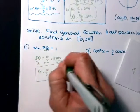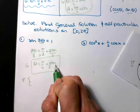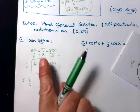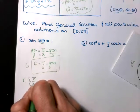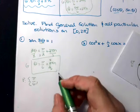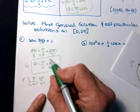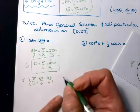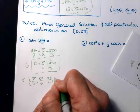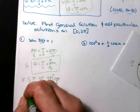There is our general solution. To find the particular solutions, we run through integer values of n until we go past 2pi. If n is 0, theta is pi sixths. If n is 1, that's 4 pi sixths plus 1, so five pi sixths. If n is 2, eight plus one is nine pi sixths. If n is 3, I get 13 pi sixths — that's too big, past 2pi. So the particular solutions are pi sixths, five pi sixths, and nine pi sixths.